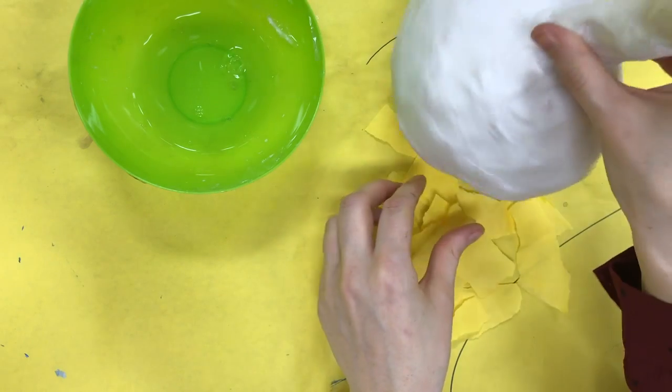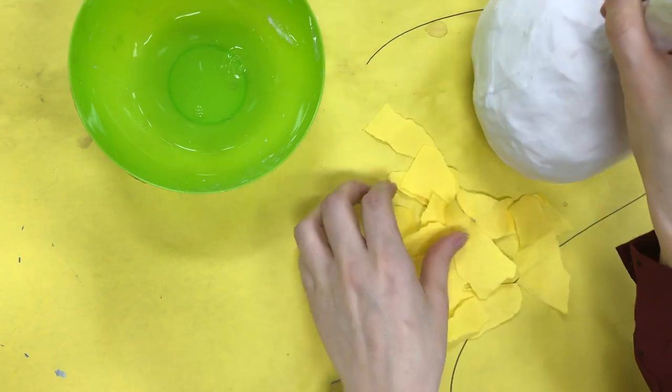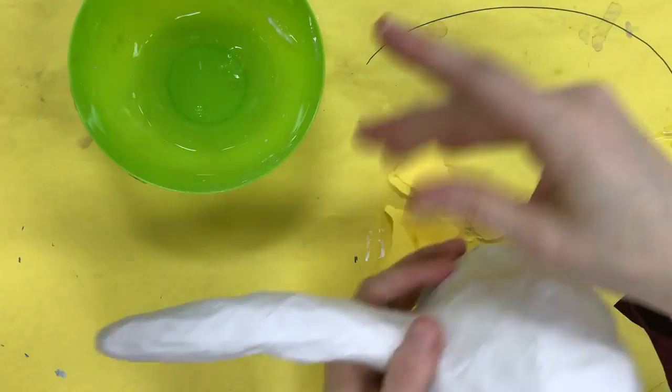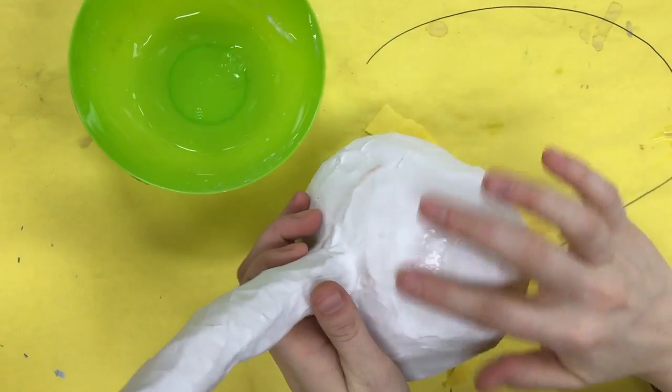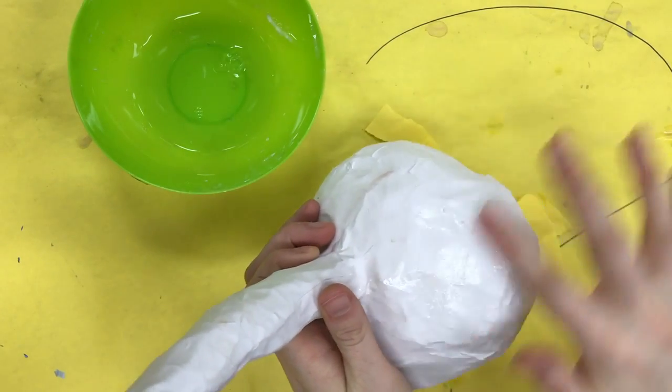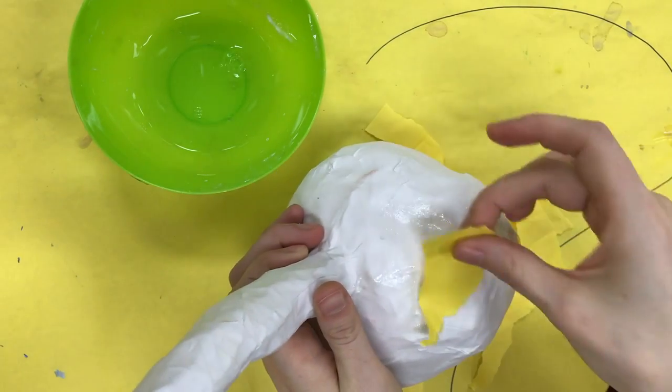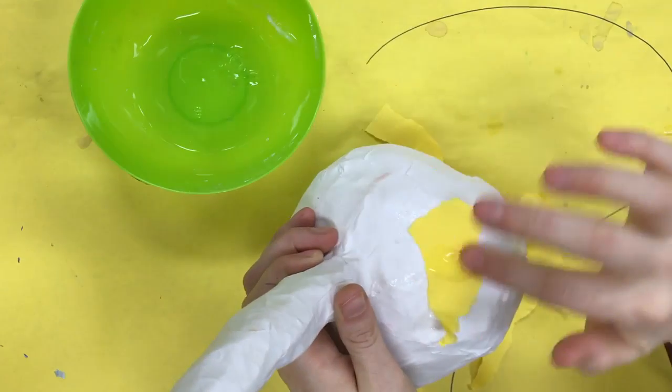The second layer of paper mache is not only going to make this stronger, but we're also trying to make it more smooth. The technique has not changed. Make my glue sandwich: apply glue, apply paper, apply more glue.